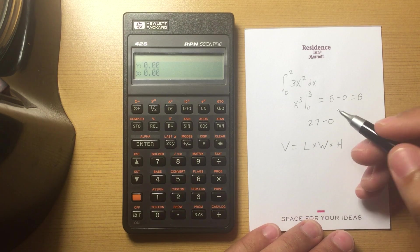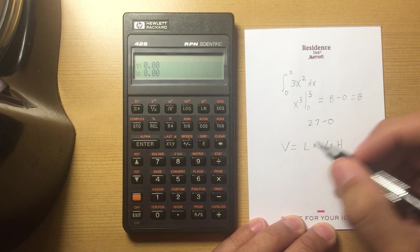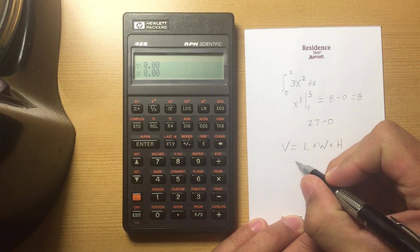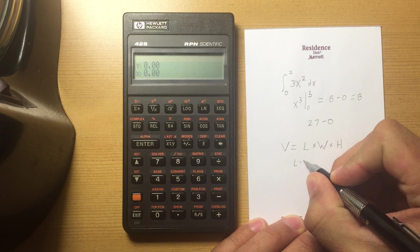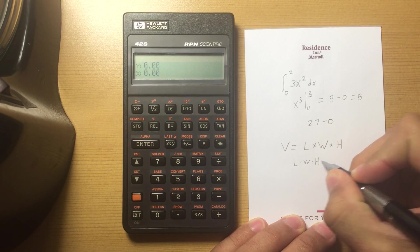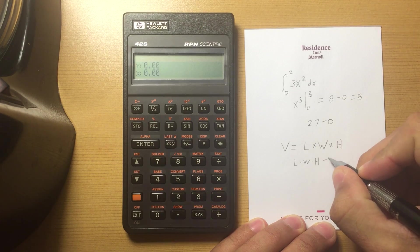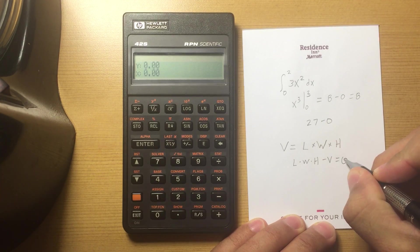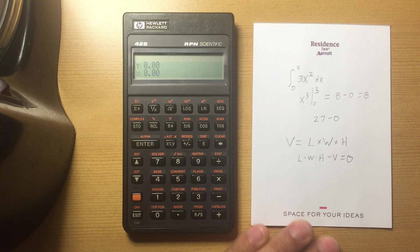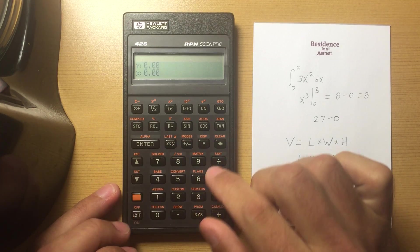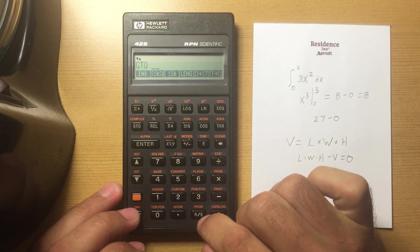We're going to use M variables and rearrange this to equal zero, so length times width times height minus V equals zero. Let's go ahead and enter that and create a new program space. Looks like I already have one.